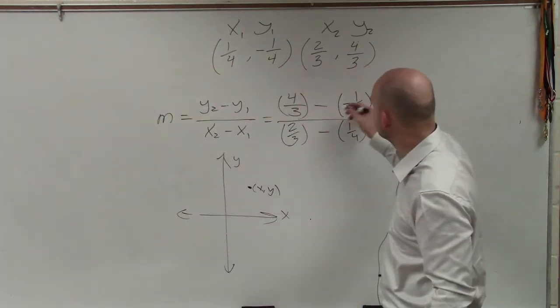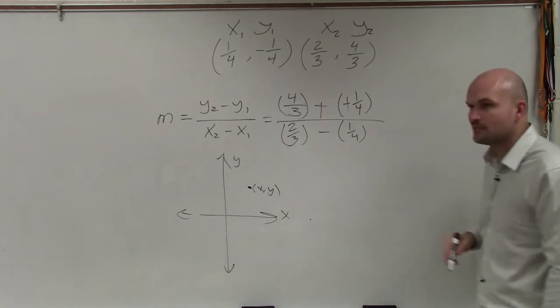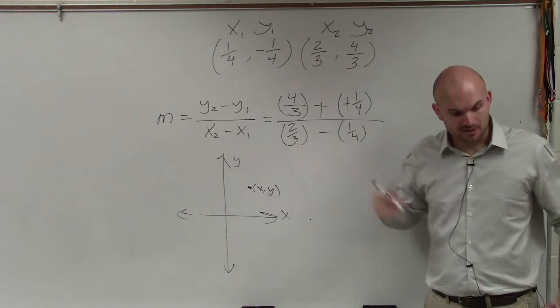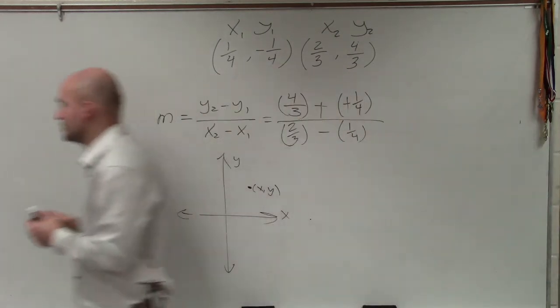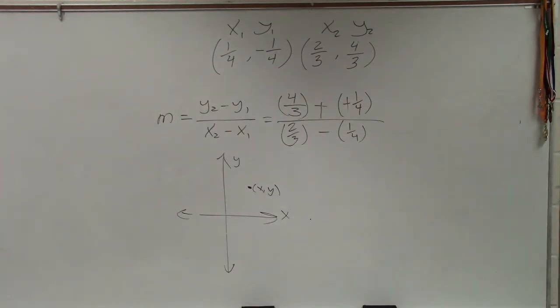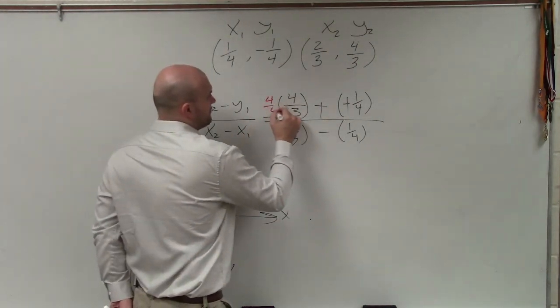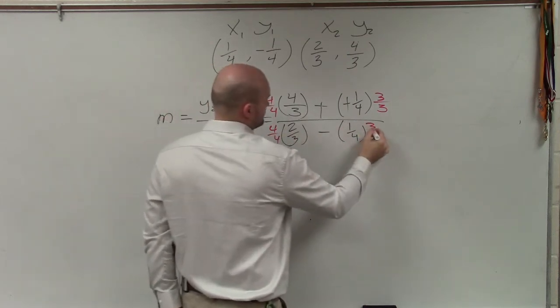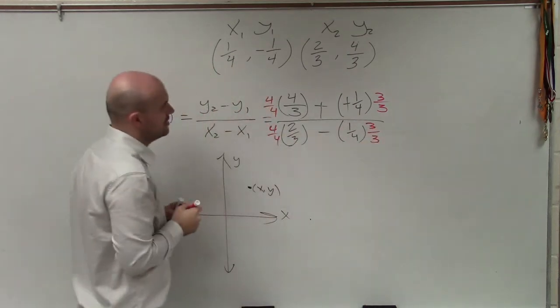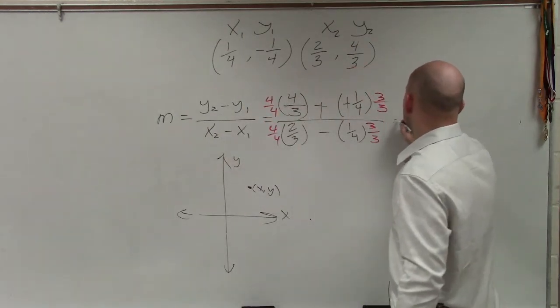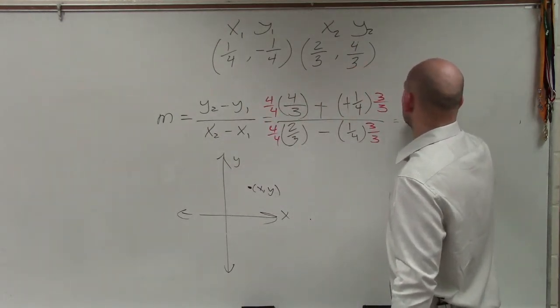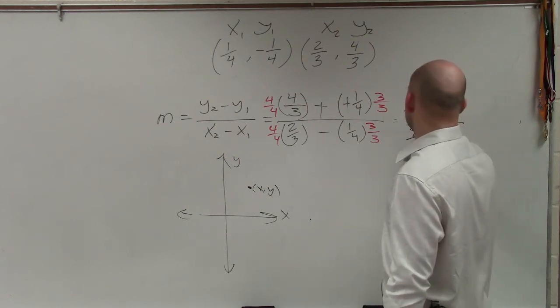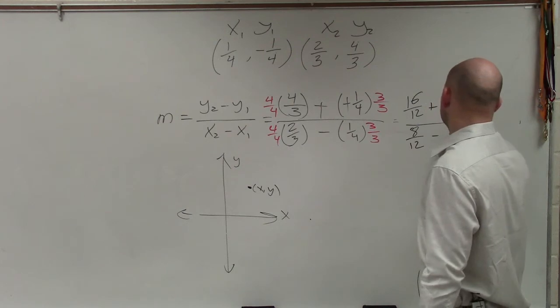So basically, when you're subtracting a negative, that turns into an addition problem. Now, we're trying to subtract fractions that do not have common denominators. So we need to make sure that we get common denominators. So we look at this, and we notice that the common denominator is going to be 12. So over here, I'll multiply by 4 over 4. Here, I'll multiply by 3 over 3. Same thing over here. So therefore, my math is now 16 over 12 plus 3 over 12 divided by 8 over 12 minus 3 over 12.